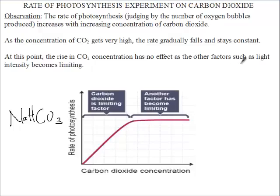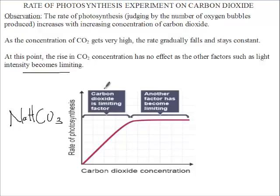At this point it has no effect, as other factors such as light intensity become limited. So initially, carbon dioxide was the limiting factor, so we decided to increase it. When it got to a point where carbon dioxide became abundant, the other factors could not match that abundance, so they became limited.